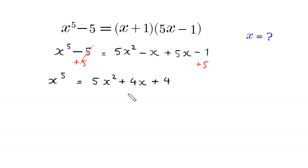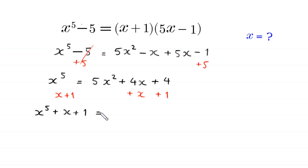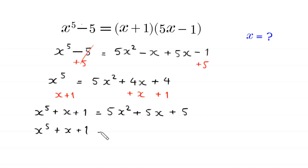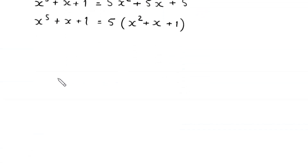Now we add (x + 1) to both sides. The left-hand side becomes x⁵ + x + 1. The right-hand side becomes 5x² + 5x + 5. From these three terms on the right we can factor out 5, giving 5(x² + x + 1).